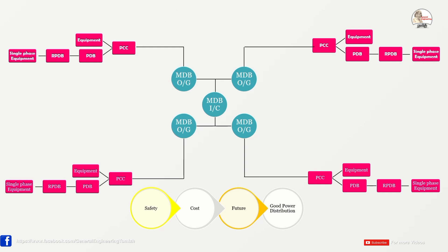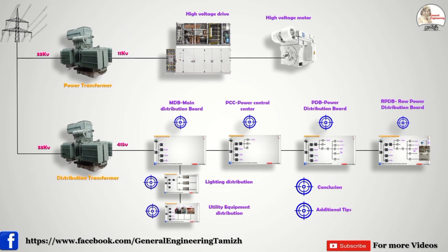The third tip is future concern. When installing any panels — MDB, PCC, PDB — always keep extra spare feeders. You cannot predict plant expansion. Extra loads or motors may be added suddenly. If spare feeders are not planned, you will have to go for a completely separate distribution with a separate transformer and separate MDB even for a small load increase. By maintaining spare feeders, you avoid this. If you follow these procedures and tips, your power distribution system will be in good shape. The next video will cover how the power distribution system is controlled by breakers and what types of breakers are available in manufacturing industries.